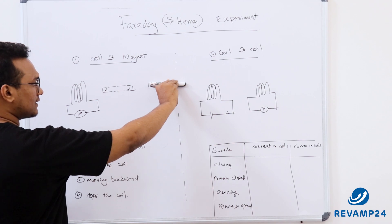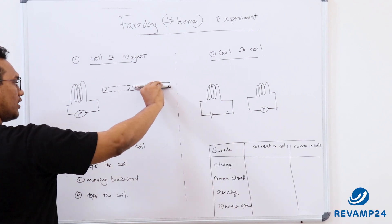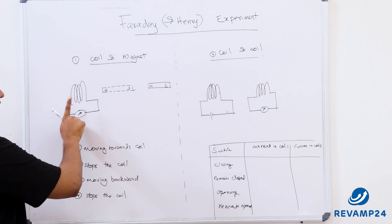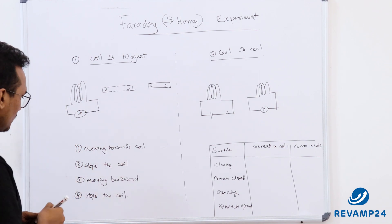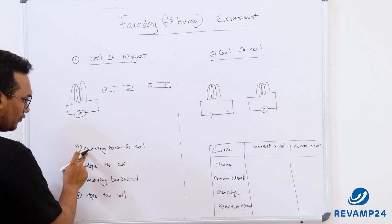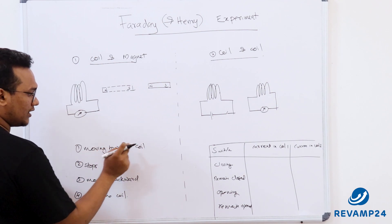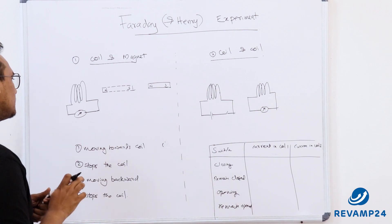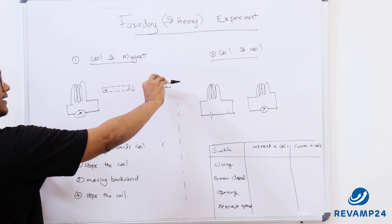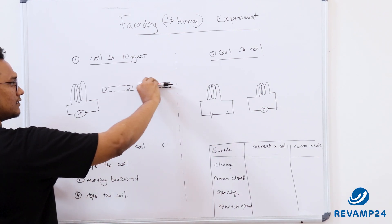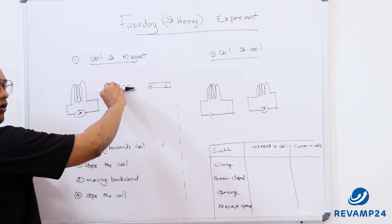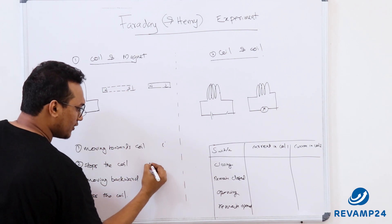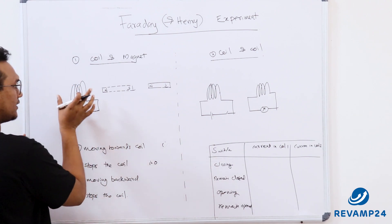When he moved the magnet towards the coil, he observed a deflection in the galvanometer — meaning current was induced. Then he stopped the magnet at a fixed position and measured again: the current was zero, i = 0.